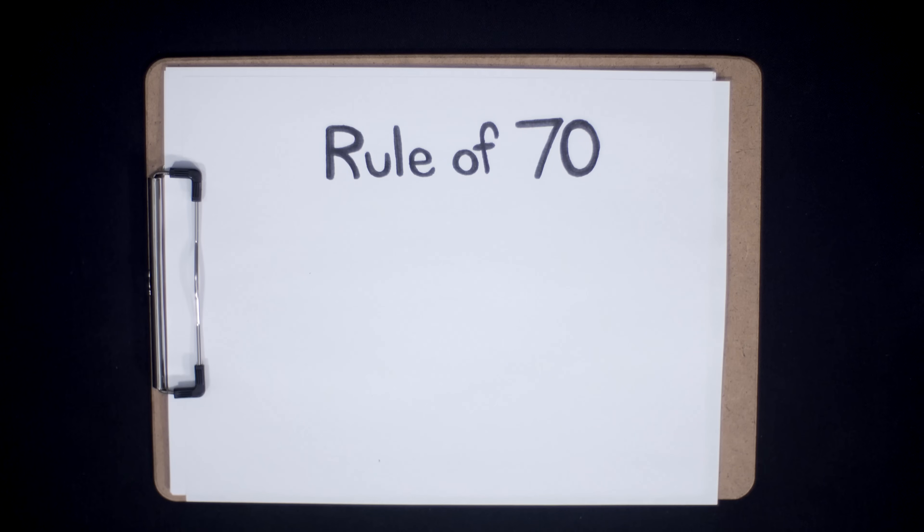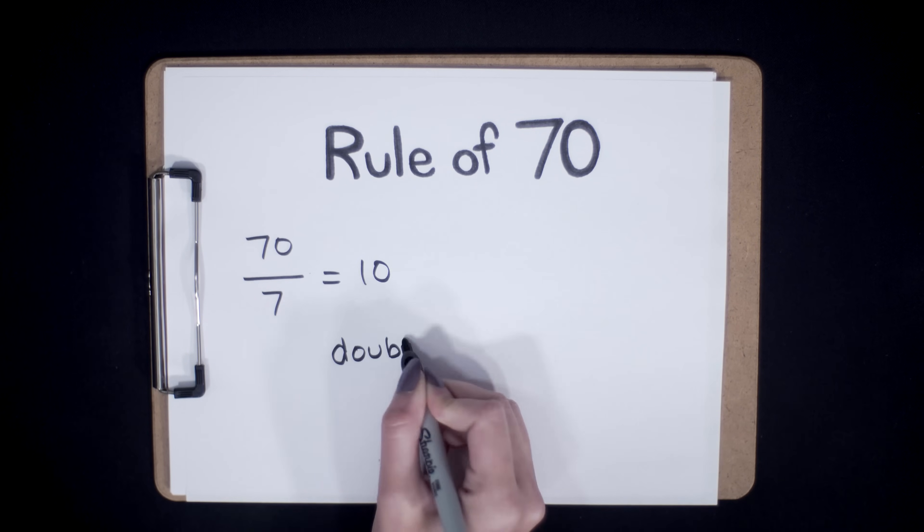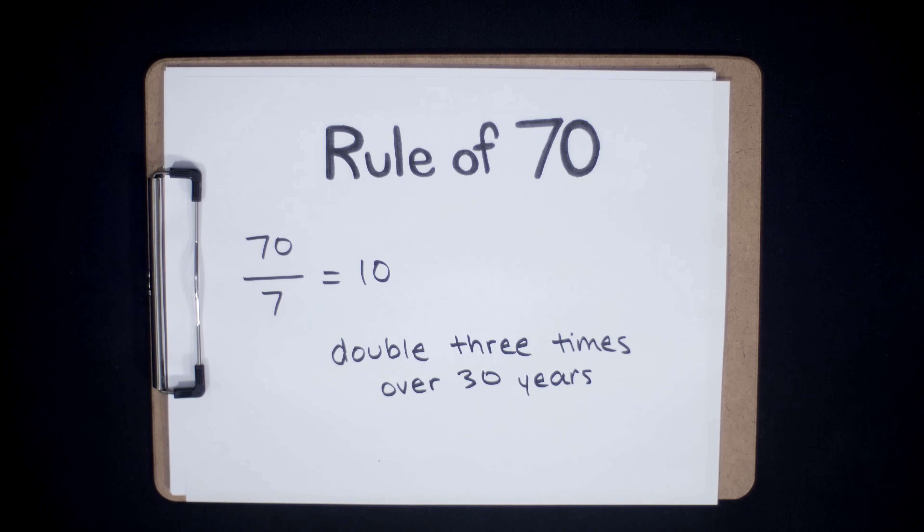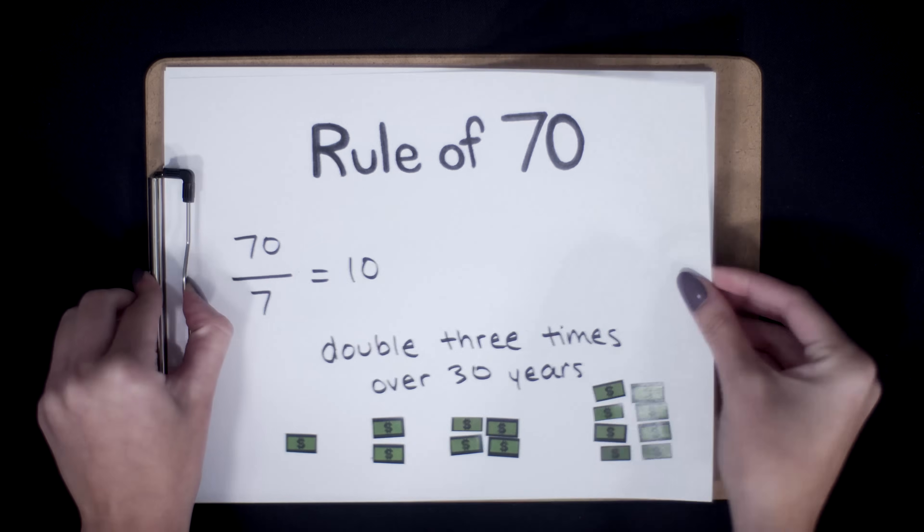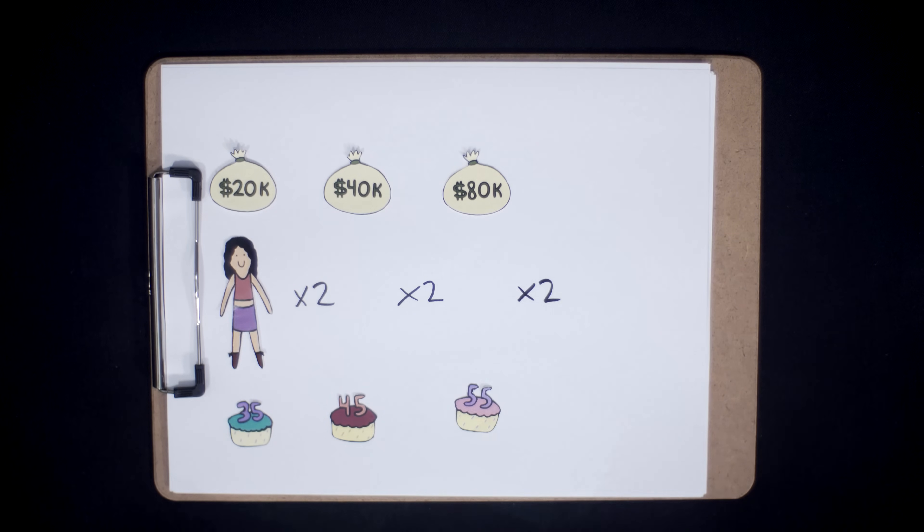Our Rule of 70 calculations are exactly the same as Scenario 1. Given a 7% annual rate of return, Meticulous Mary's money will double every 10 years. The only difference from Scenario 1 is that Meticulous Mary's money will double 3 times instead of 2 times. She now has 30 years until retirement instead of 20. Meticulous Mary's $20,000 will double to $40,000 by the time she's 45, will double again to $80,000 by the time she's 55, and will double yet again to $160,000 by the time she's 65.